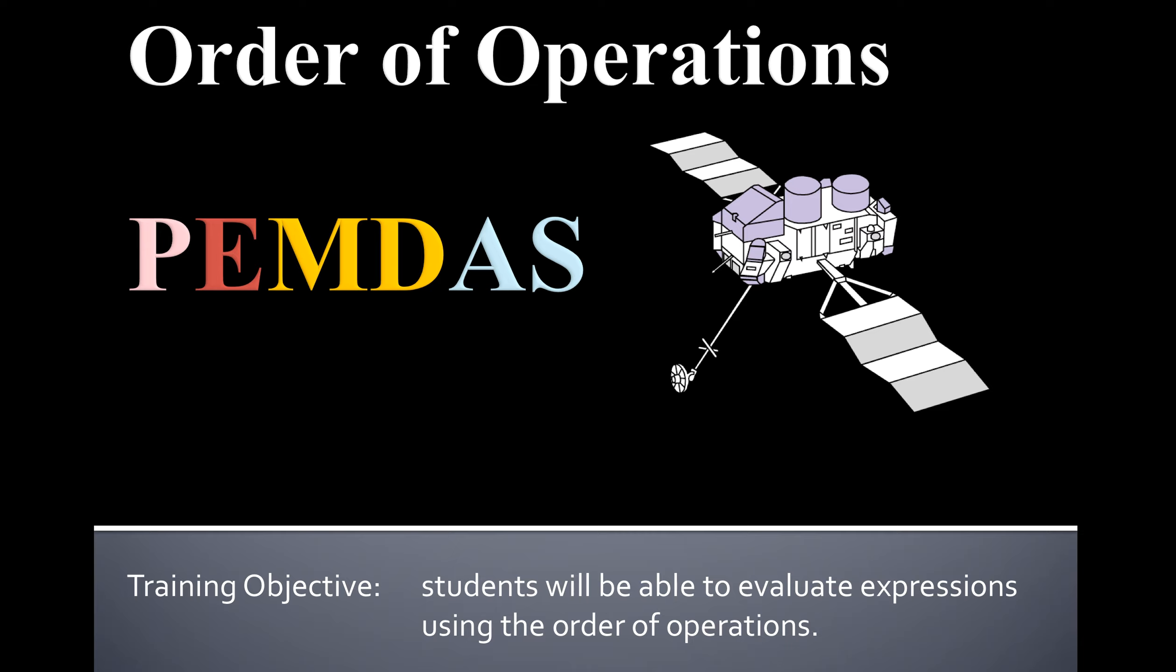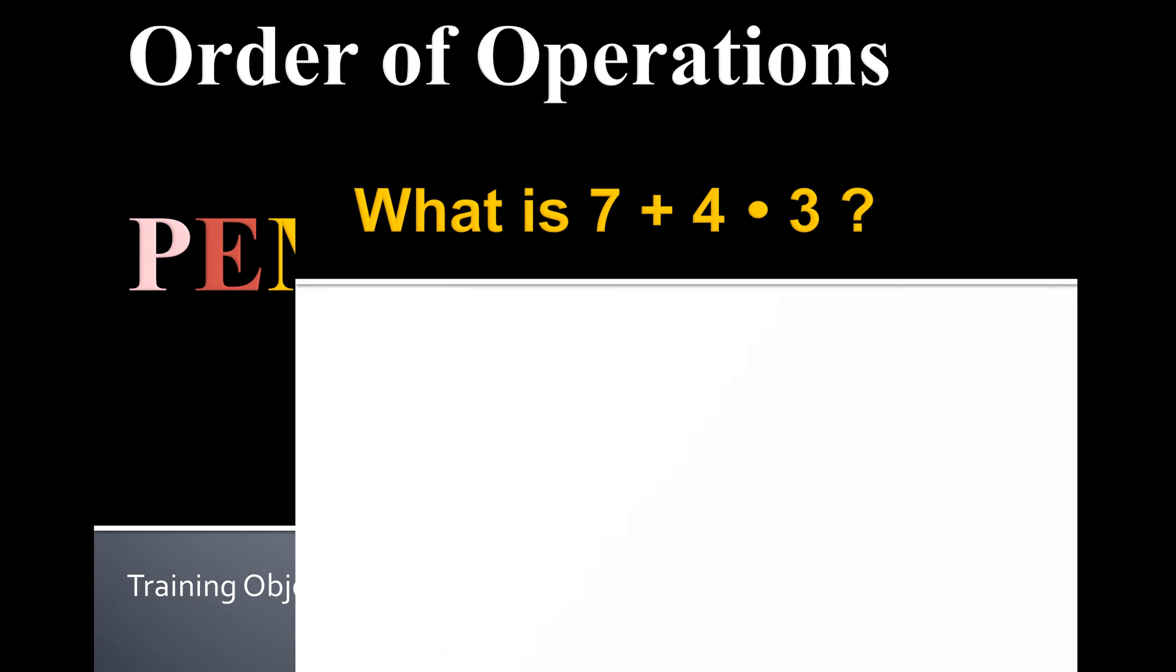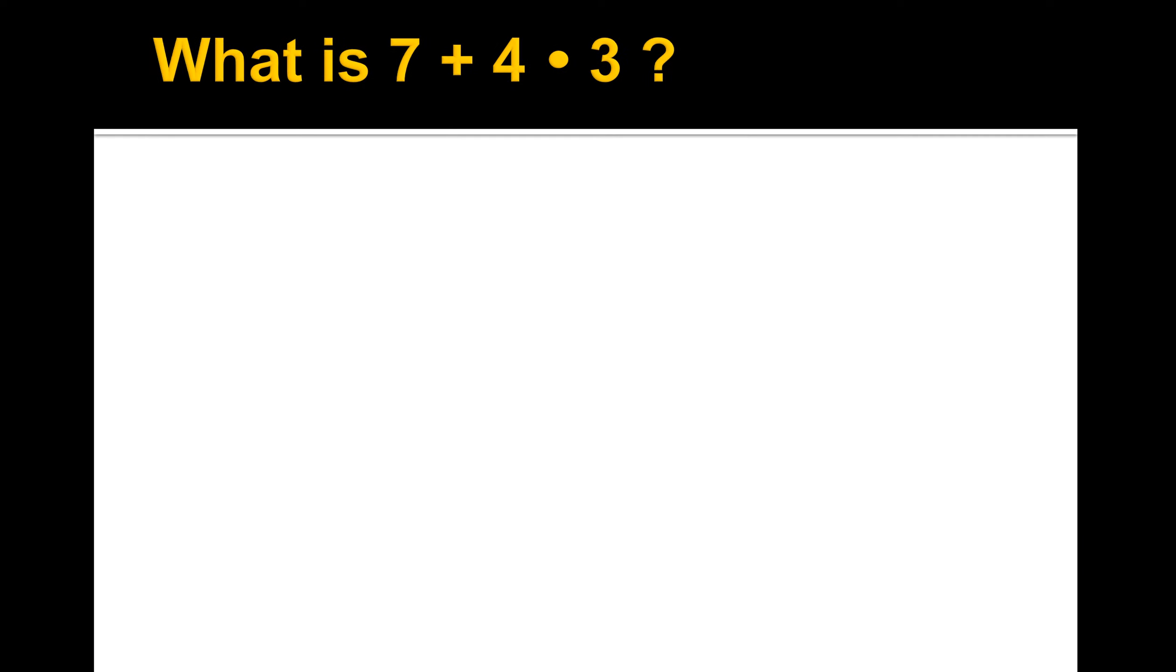In this video we're going to take a look at order of operations. Let's say we have this expression: 7 plus 4 times 3. Well, in math we always want to all arrive at the same answer, right? We need this to have one answer. So you might think, well, 7 plus 4 is 11, and then we multiply by 3 and we get 33.